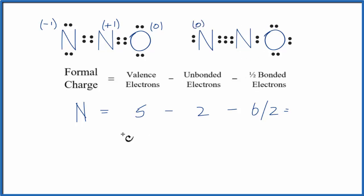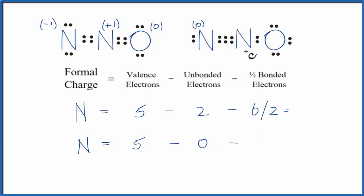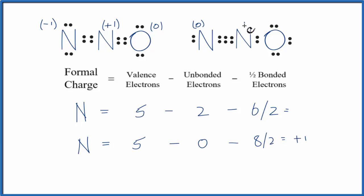For the nitrogen in the center of this structure, we have five valence electrons. Everything is involved in a chemical bond, so we don't have any unbonded valence electrons. The bonded electrons: two, four, six, eight, divided by two gives four. Five minus zero, minus four, that gives us a plus one. So this nitrogen has a formal charge of plus one.